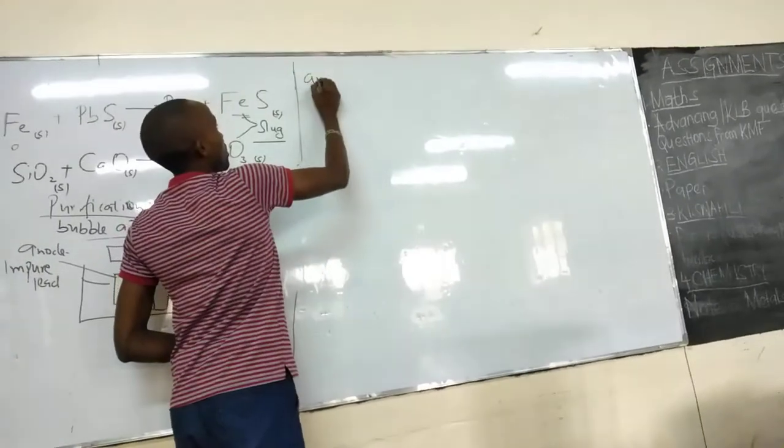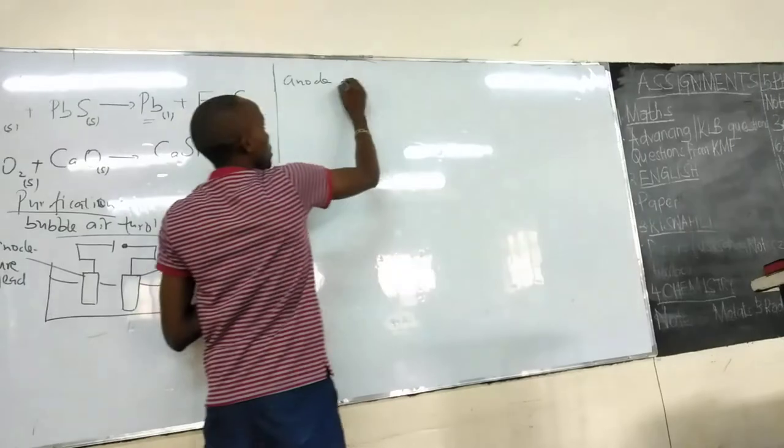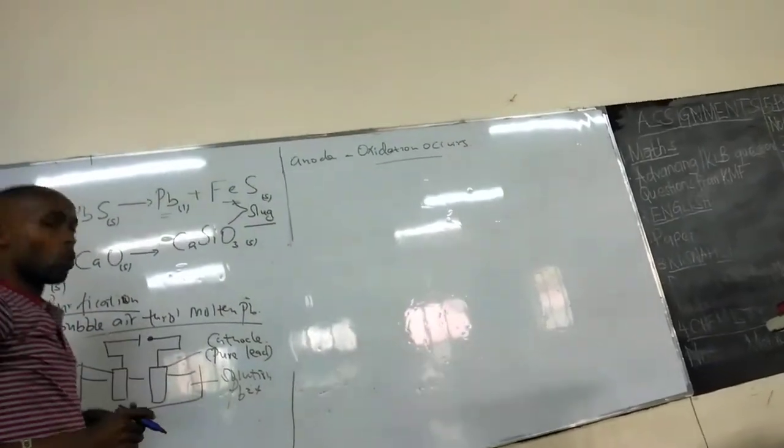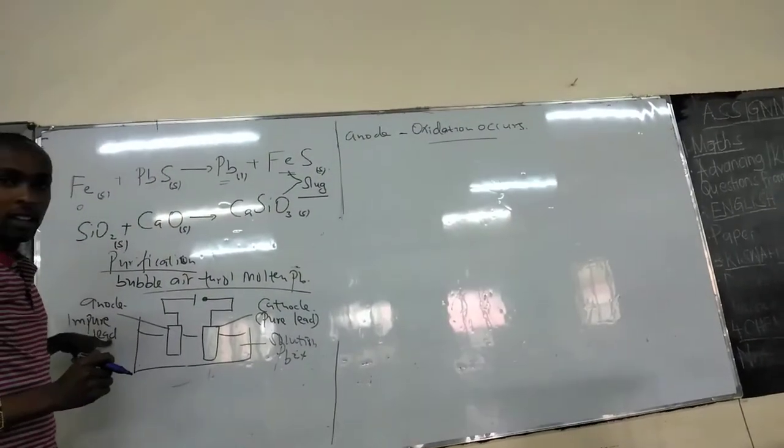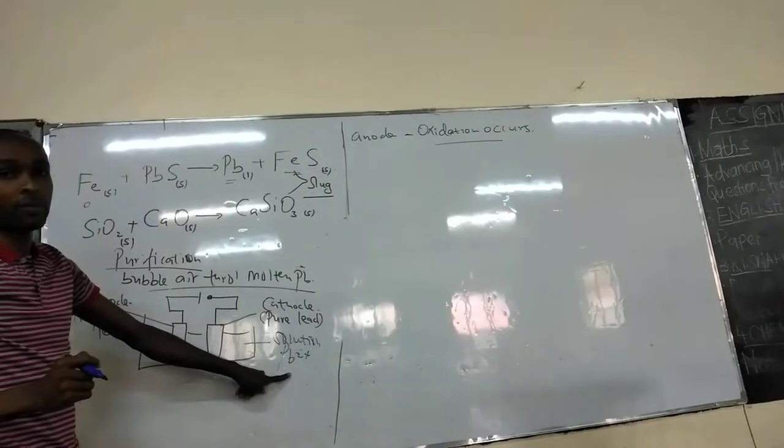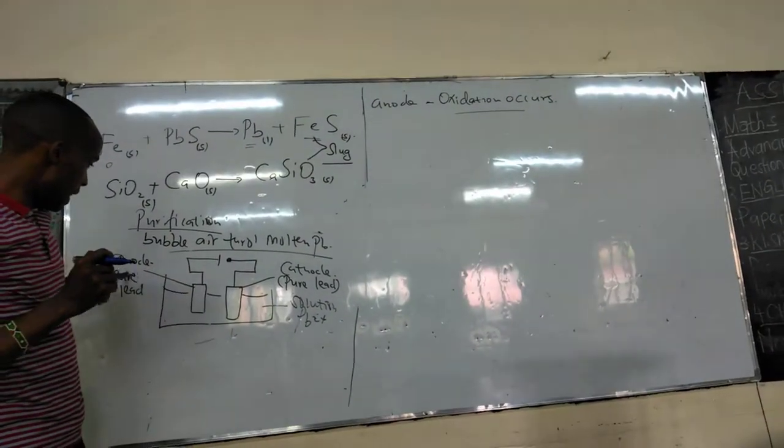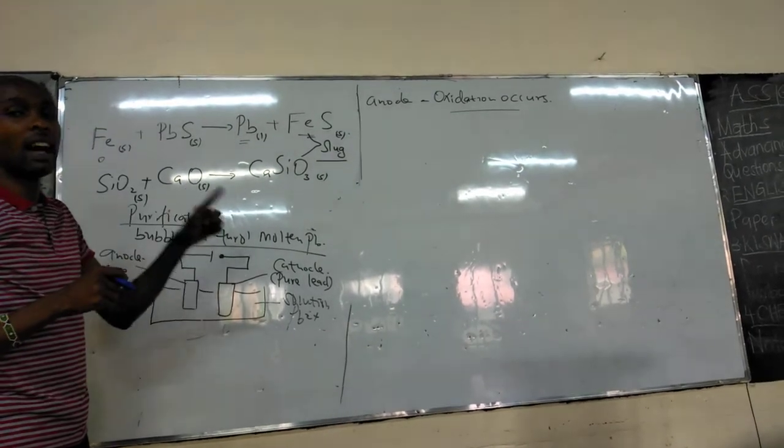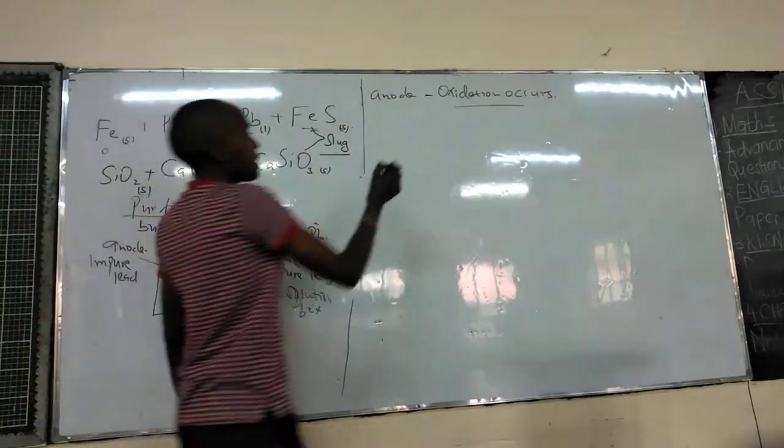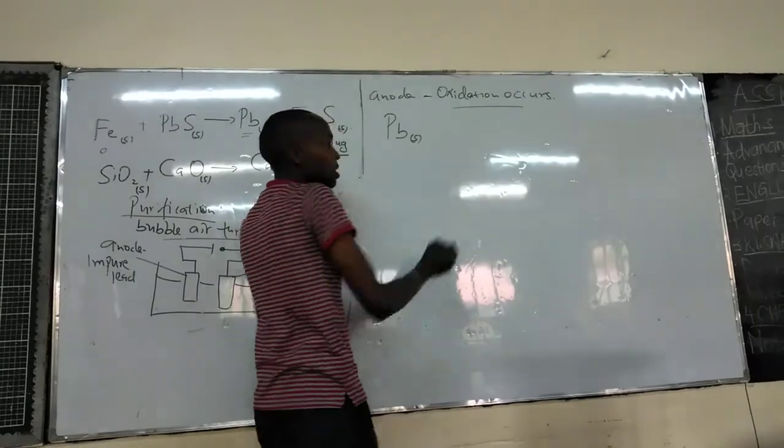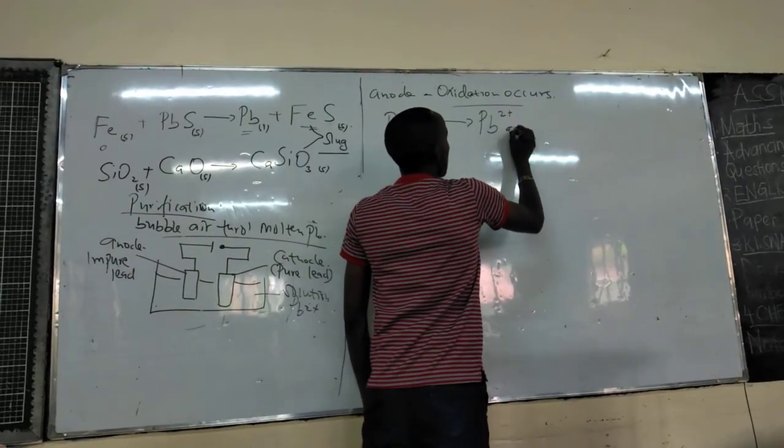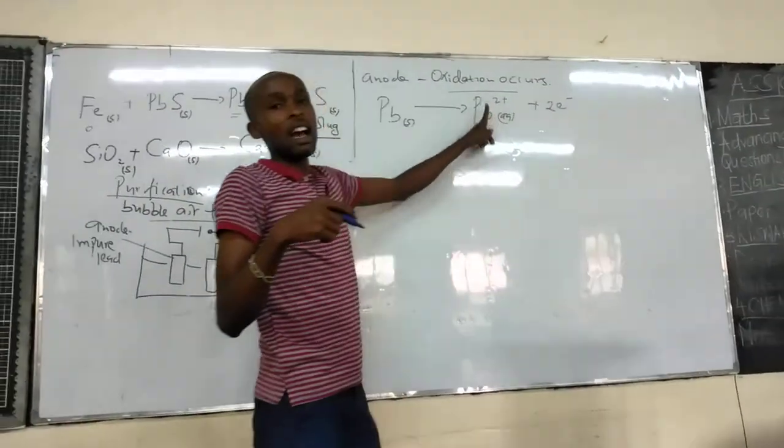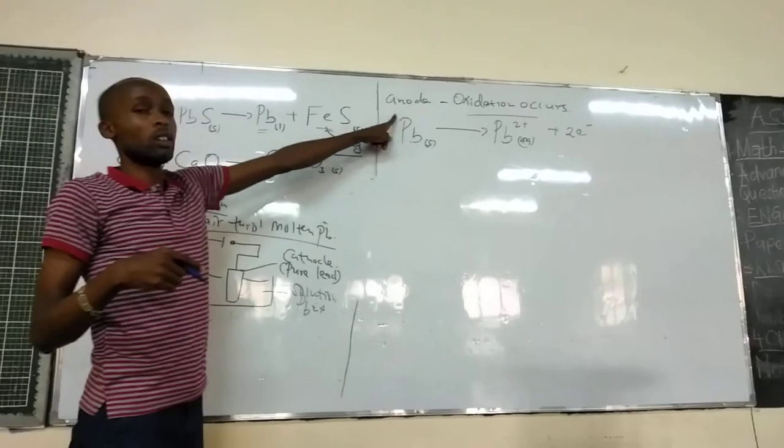Now, starting with the anode, remember we always say that at the anode, oxidation occurs. But this time around, we have a special condition. The anode is made up of lead. So, what is going to happen? The lead atoms that are making up the anode are going to be oxidized to form lead ions, which are going to go into the solution. Which means, we have lead atoms forming lead ions plus two electrons. This is oxidation because electrons are being released.